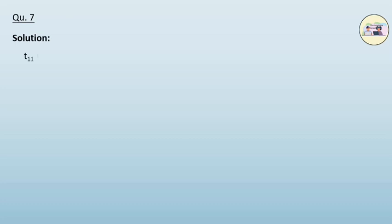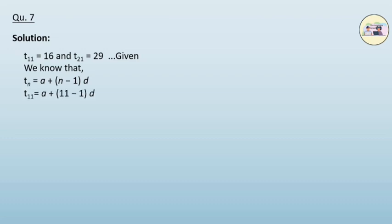Solution. It is given that t_11 is 16 and t_21 is 29. We know that t_n is equal to a plus n minus 1 into d.